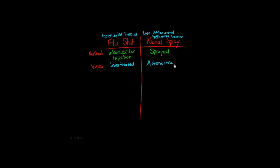The reason why this difference is so important is because it determines who can get which kind of vaccine. Can you get infected from the inactivated virus that's used in the flu shot? Absolutely not. It's inactivated, it's not able to replicate, and there's no infection.